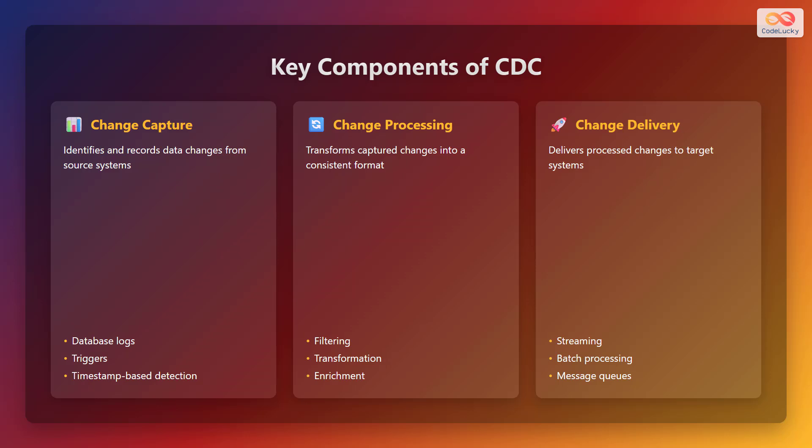The second component is change processing. Here, the captured changes are transformed into a consistent and usable format. This involves filtering out irrelevant changes, transforming the data to match the target system's schema, and enriching the data with additional information if necessary.